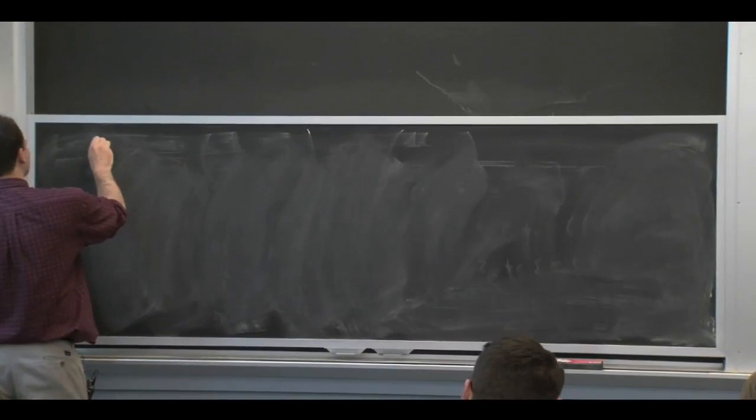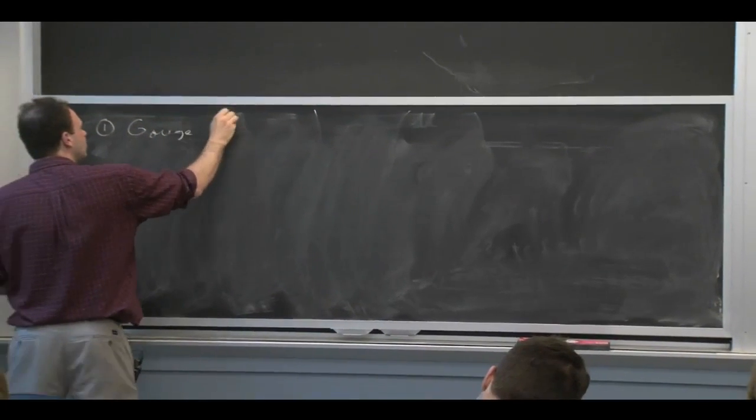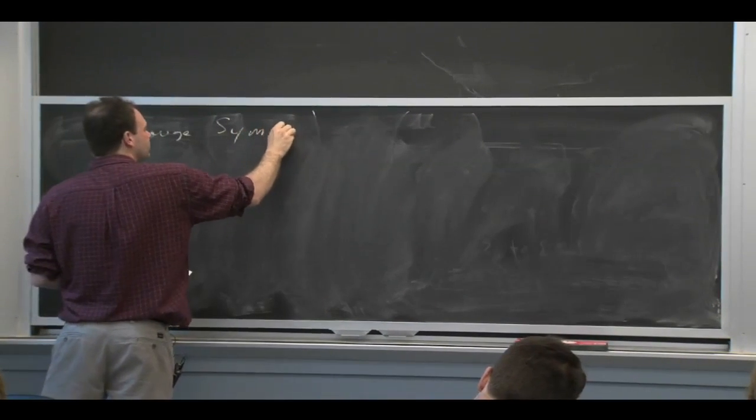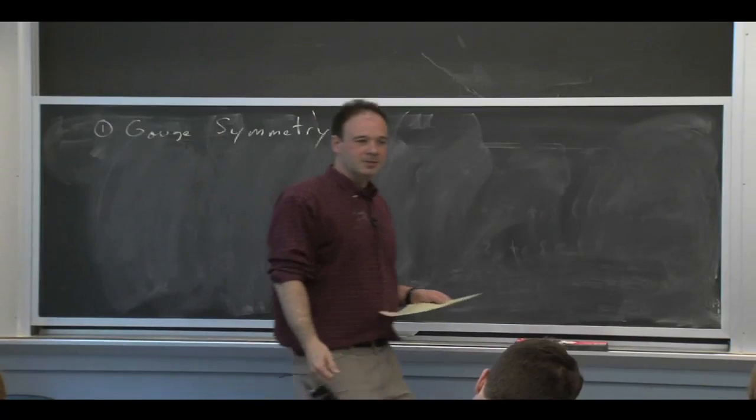But along the way, we saw we could write SCT in two-component form, which is kind of nice. So let's talk about something that's more important, which is gauge symmetry. Is there any questions about the spins before we talk about gauge symmetry?